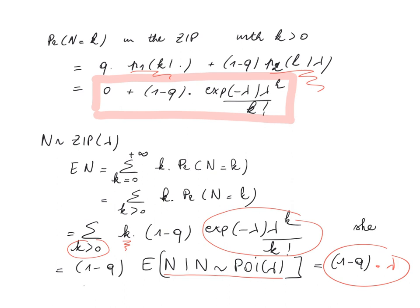So that's also what you see on sheet 55 in the part on frequency modeling. In this video we explained the general recipe to construct a discrete mixture of count distributions, motivated why you might work with the zero-inflated Poisson distribution to inflate the probability mass at zero, and went through the derivation of the probability function and the expected value of the zero-inflated Poisson.